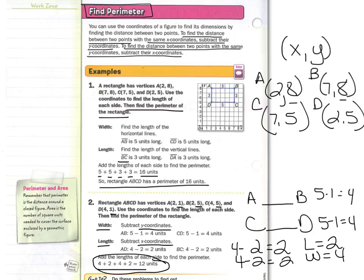Length equals 2, width equals 4. If we add them all together, 4 plus 2 plus 4 plus 2 equals 12. Remember that the perimeter is the distance around a closed figure. Area is the number of square units needed to cover the surface enclosed by a geometric figure.